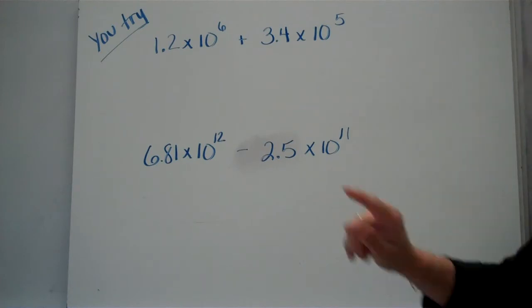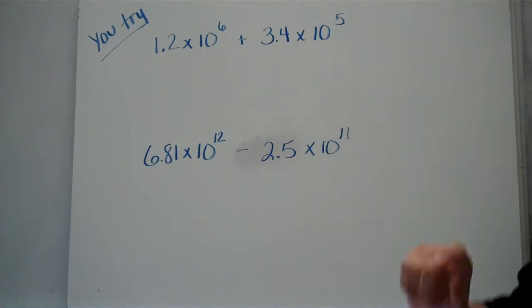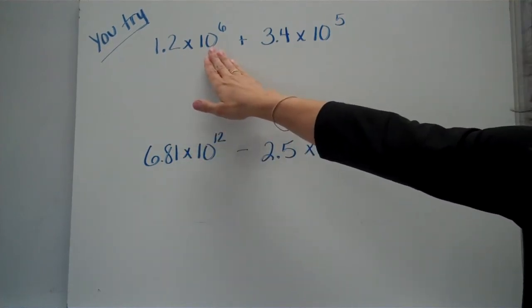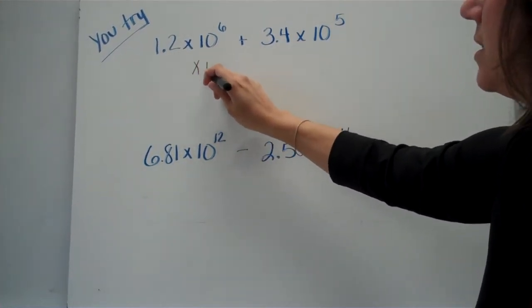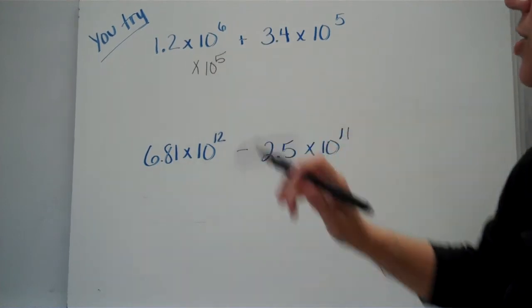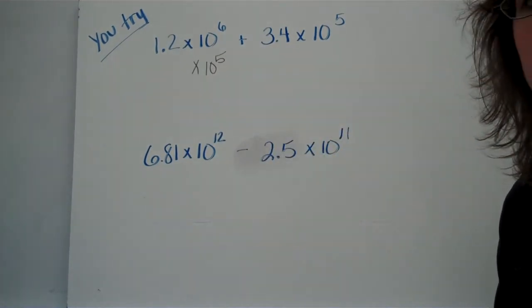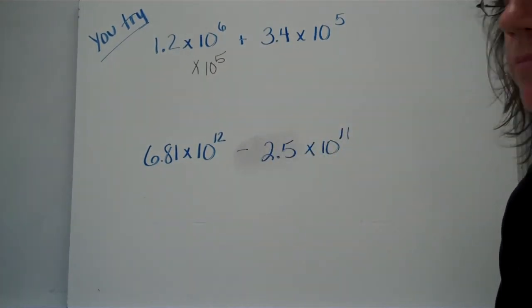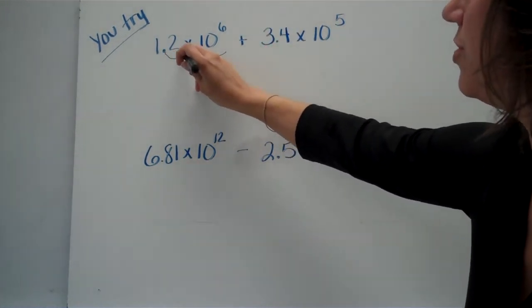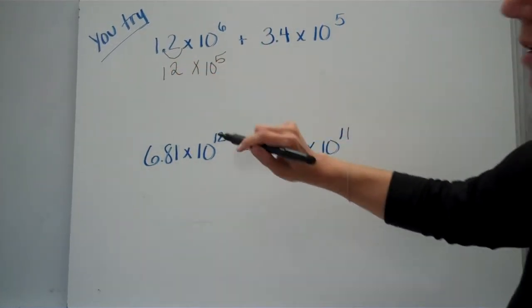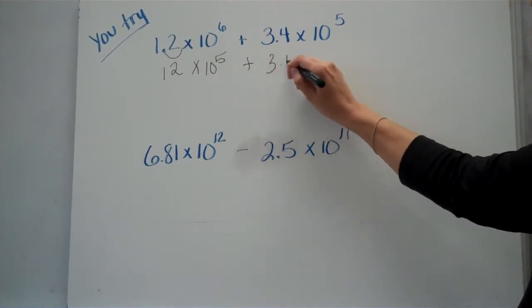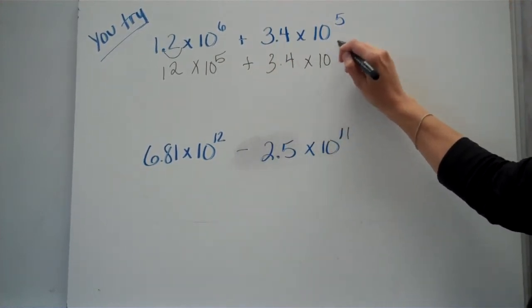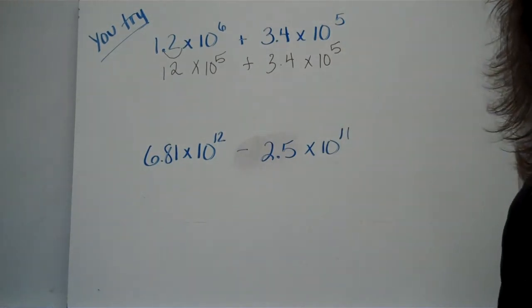All right. For this problem here, notice the exponents are different. We want to make them be the same. Now, I chose to make this one be a 5. You certainly could do the other way. I am going to move my decimal point, making this 10 to the fifth power. Do you know what I'm going to do with the decimal to make that to be 10 to the fifth? I want to subtract 1, so I'm moving it this way. So I've got 12 now. Now, I'm going to rewrite the rest of my problem here.